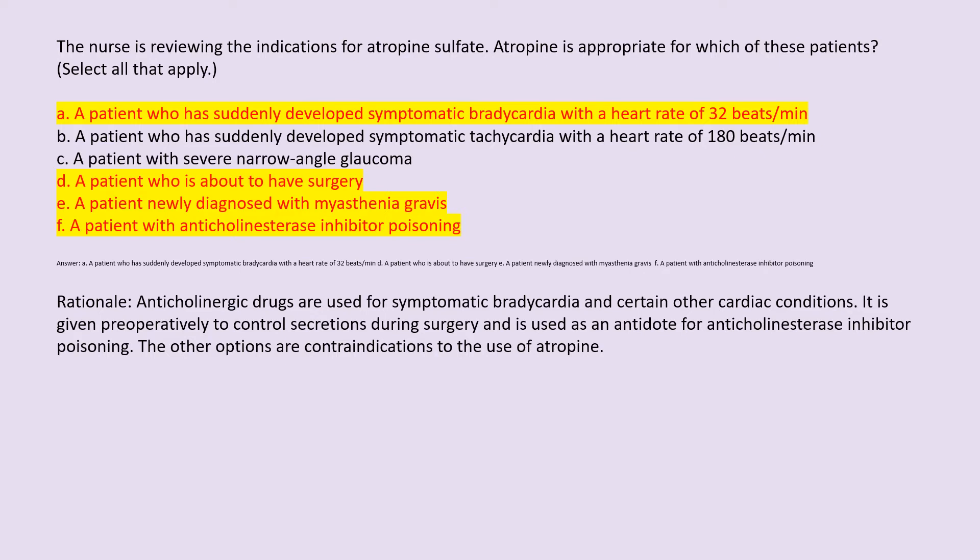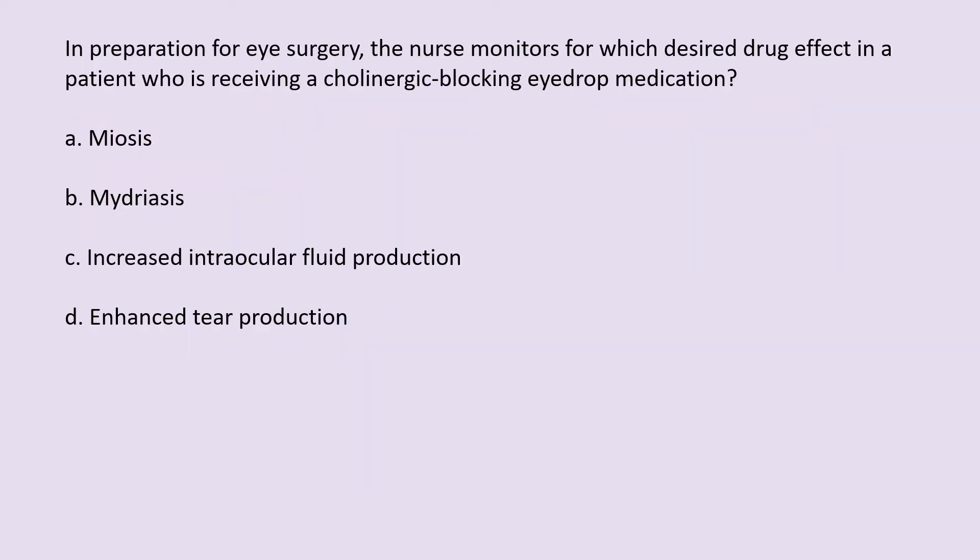In preparation for eye surgery, the nurse monitors for which desired drug effect in a patient who is receiving a cholinergic-blocking eyedrop medication? A. Miosis. B. Mydriasis. C. Increased intraocular fluid production. D. Enhanced tear production.